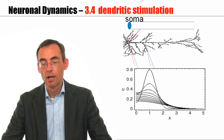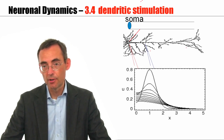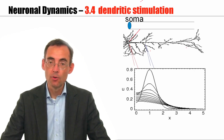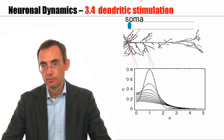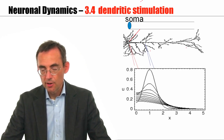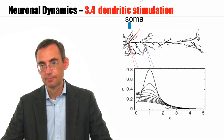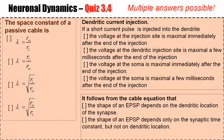To summarize, the cable equation allows us to understand how charge that arrives through synapses or through current injection on the dendrite spreads out over the dendrite, and how it gives rise to a post-synaptic potential — a time course — and a potential at the soma. With this, I would like to close this part. Please take a couple of minutes for the quiz before we go on to the final part of this week, where we discuss modern neuron models with dendrites.